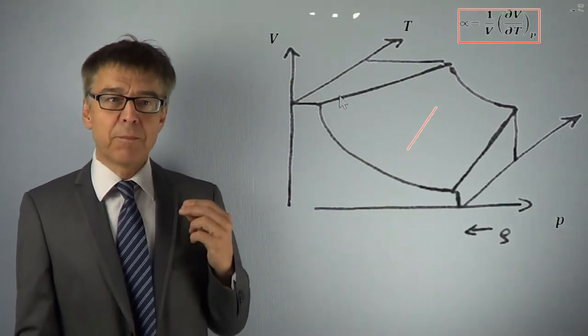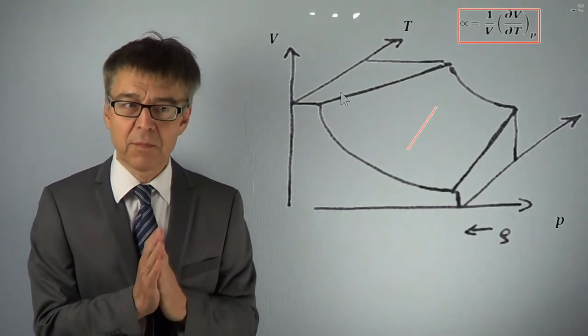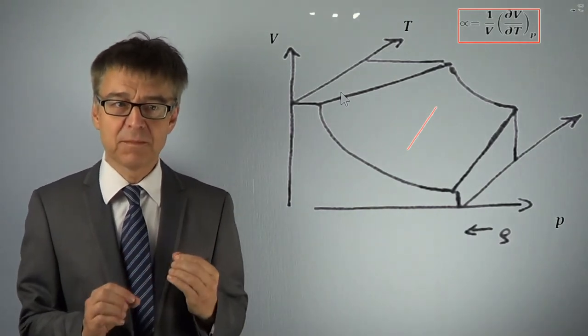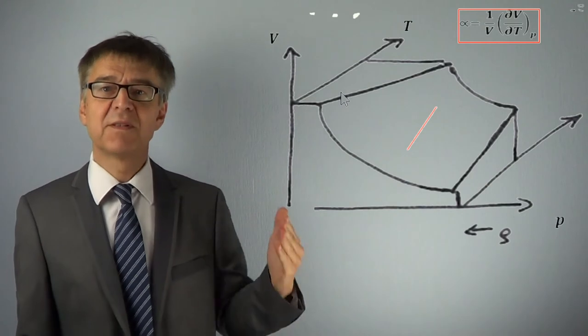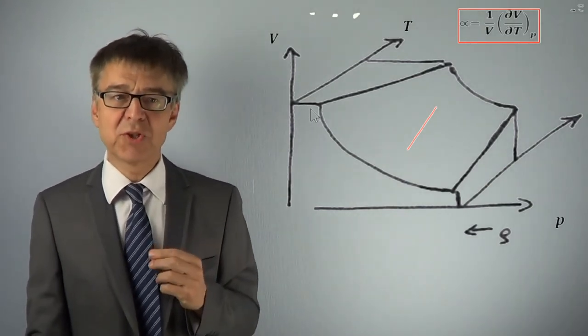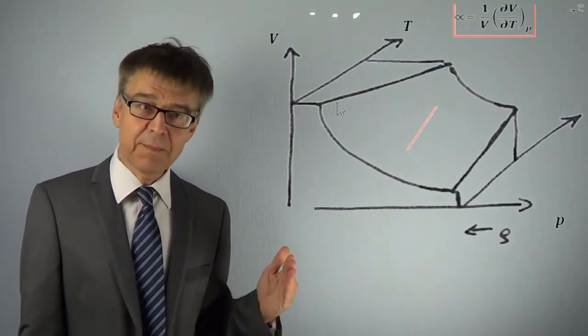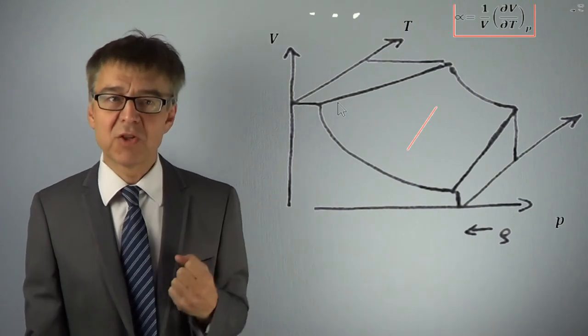If we keep pressure constant, the partial derivative of the molar volume with respect to temperature, the north-south direction, is associated with the thermal expansion coefficient alpha. The steeper the slope, the larger alpha.